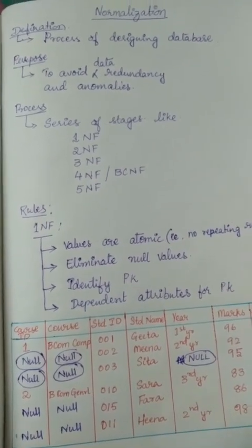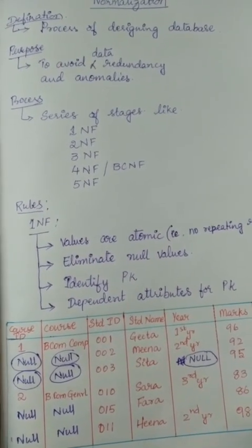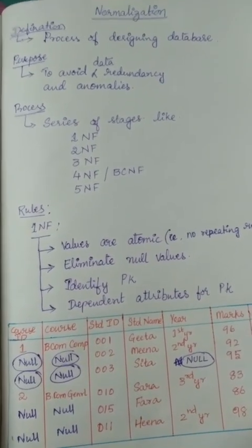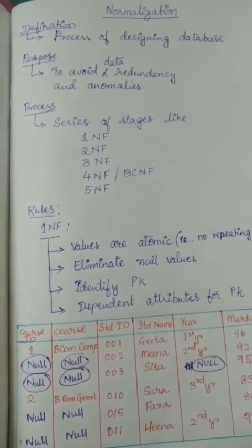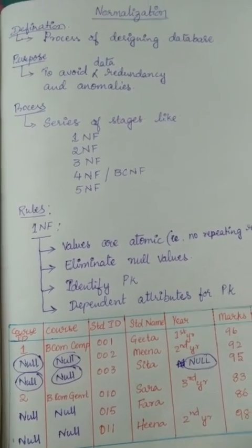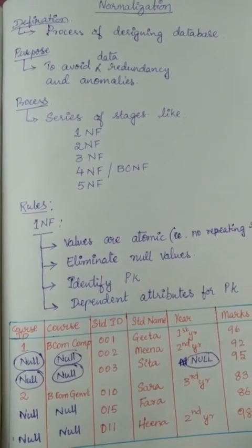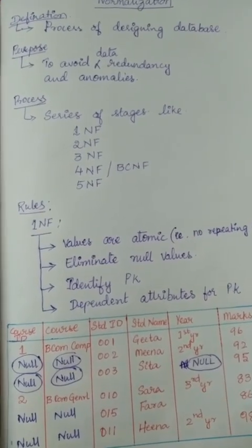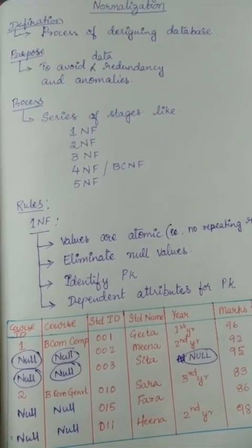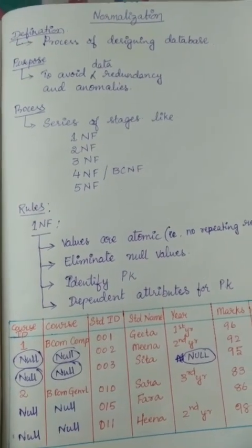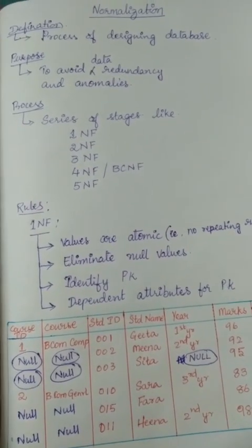So why should we do this? Normalization is done mainly to avoid redundancy — that is data redundancy and data anomalies. Data redundancy means repeated data, repeated information being displayed everywhere. If there is repeated data, unnecessary information is being transmitted many times, and this will reduce the efficiency of data being displayed on the application we are using. So the basic purpose of designing a database should be to avoid any data redundancy.